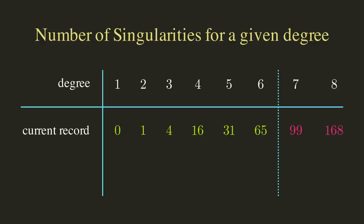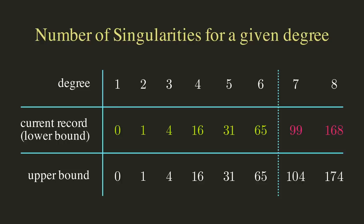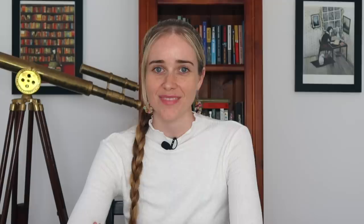Mathematicians have been able to sort of sandwich the maximal number of singularities a surface of a given degree could have via examples for the lower bound, and some more abstract arguments for the upper bound. And it's finally time to get to the star of this video, a surface of degree six, simply called a sextic that cannot be bettered, the bath sextic.